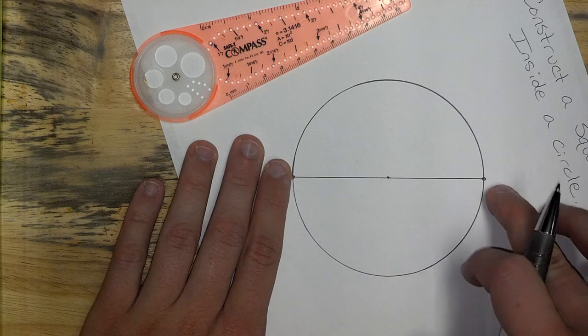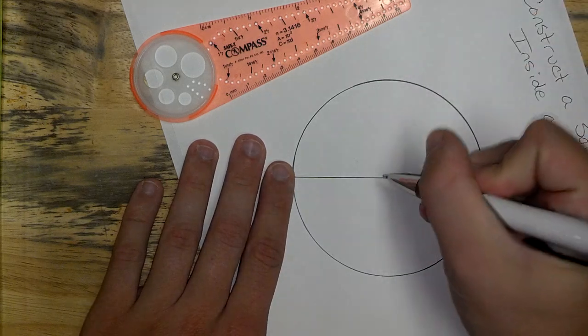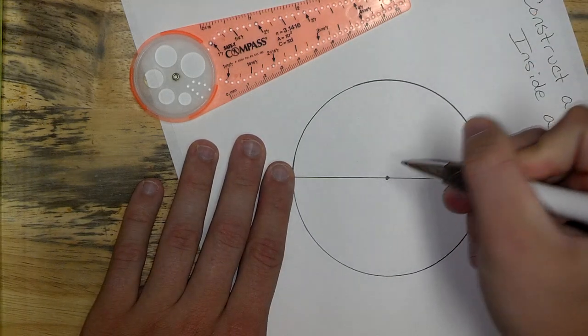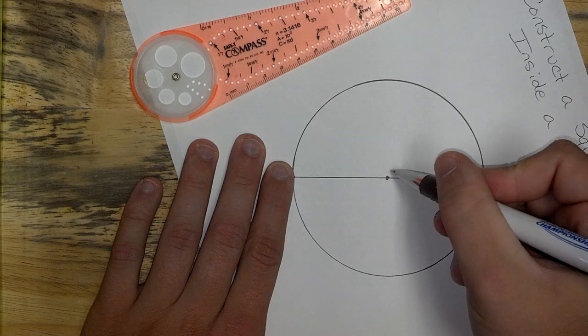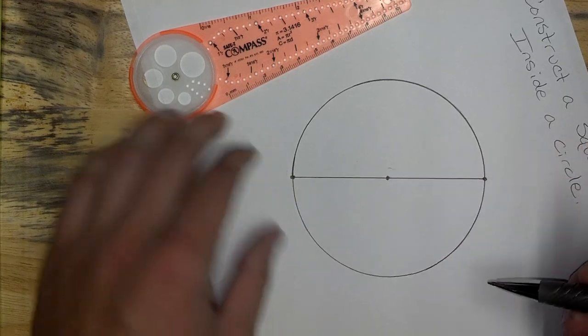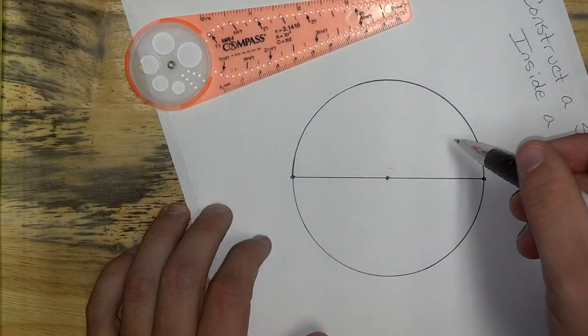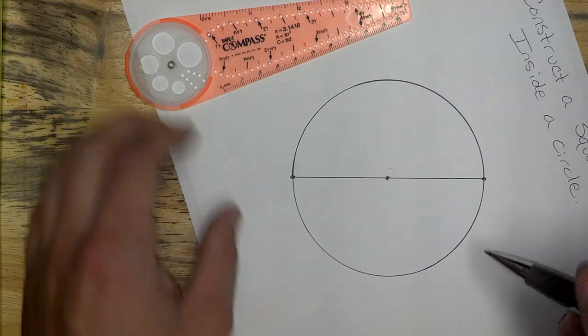I'm going to bisect it, which means I'm going to create a line right through this middle, right through the center. It's also going to be 90 degrees, which is exactly what I need, so that it will chop my circle into four even pieces.